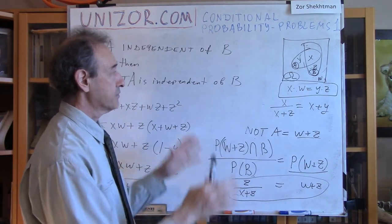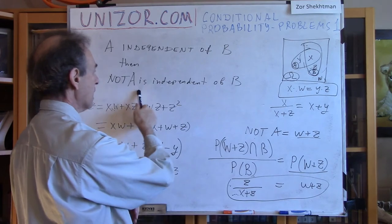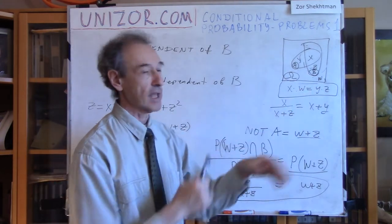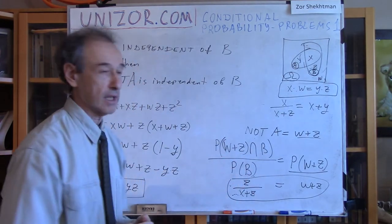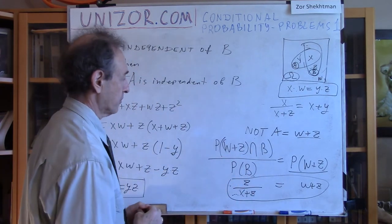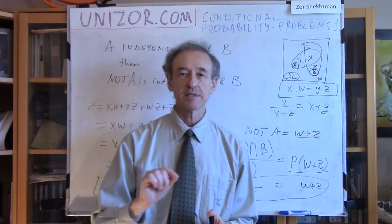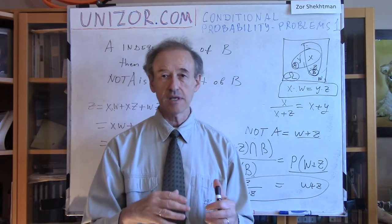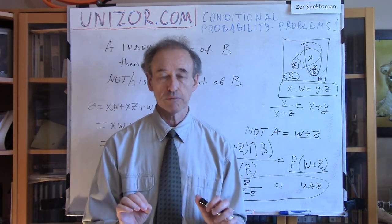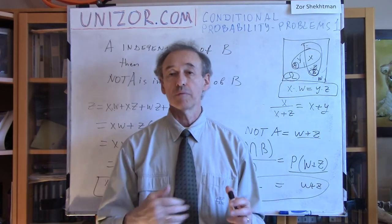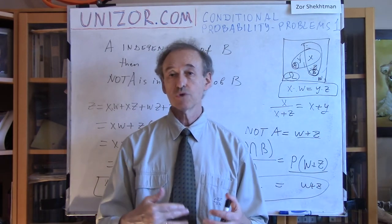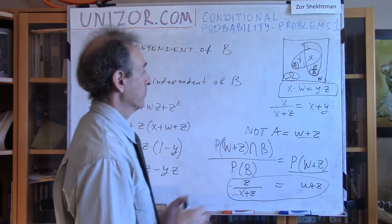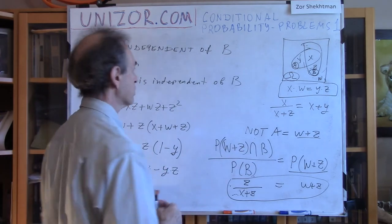So if A is independent of B, then not-A is independent of B as well. All we had to do is express it in the language of X, Y, Z, W, and it becomes a plain problem. By the way, in the notes for this lecture, I also present a more probabilistic approach — please read the notes on unizor.com for a second solution.